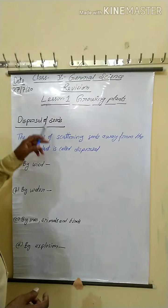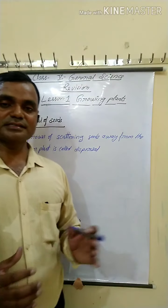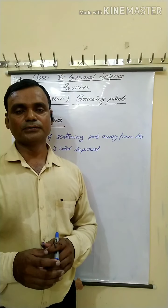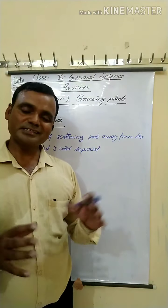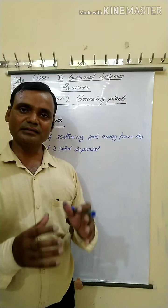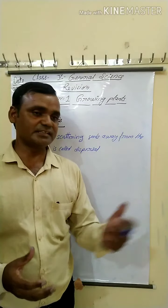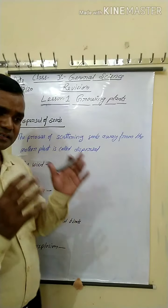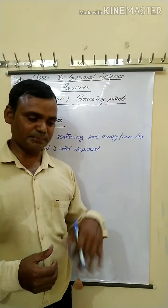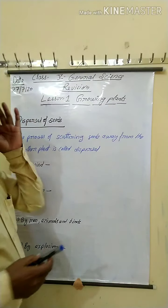Next topic: dispersal of seeds. When fruits ripen, the seeds are well developed. Dispersal of seeds is very necessary for proper growth of plants. If all seeds fall near the mother plant in the same place, they do not get the proper amount of nutrients, light, air, and other requirements, so plants cannot grow properly and may die.